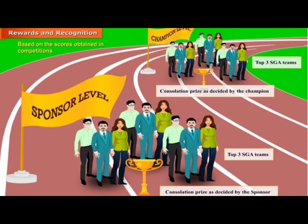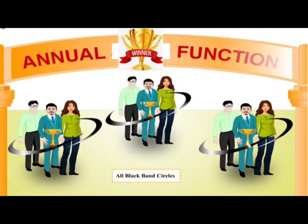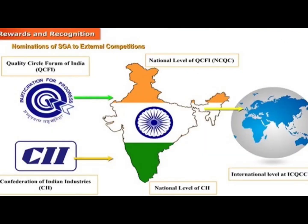Based on scores obtained in competitions at various levels, SGA circles are recognized. At champion level: top three SGA teams and a consolation prize as decided by the champion. At sponsor level: top three SGA teams and a consolation prize as decided by the sponsor. Awards given in the annual function based on apex level results include: top three SGA circles in each of the three streams, all black band circles, top 25% circles scoring more than 75% at apex level, consistent performers remaining in black band for the last three consecutive years, and all SGA circles at apex level receive a token of appreciation, trophies, and some top trophies from sponsor or champion recognition.